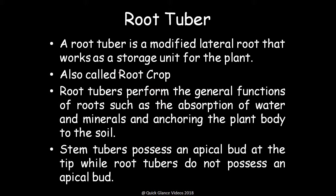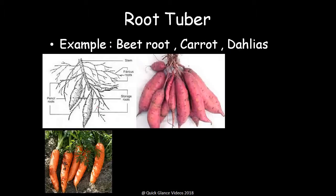Root tubers are modified lateral roots that work as a storage unit for the plant, also called root crops. The root tuber performs general root functions such as absorption of water and minerals, and anchoring the plant body to the soil, and also helps in propagation. Unlike stem tubers, which possess apical buds at the tip, root tubers do not possess any apical bud. Examples include beet root, carrot, and Dahlia, where lateral roots develop into tubers with nutrient reserves.